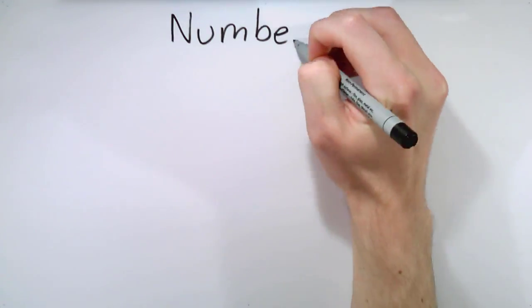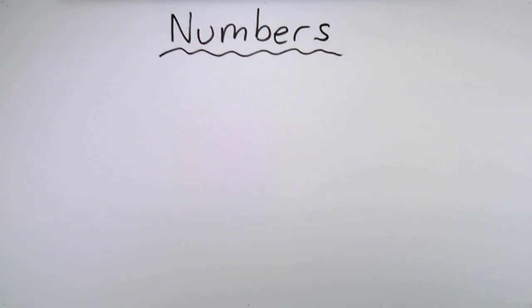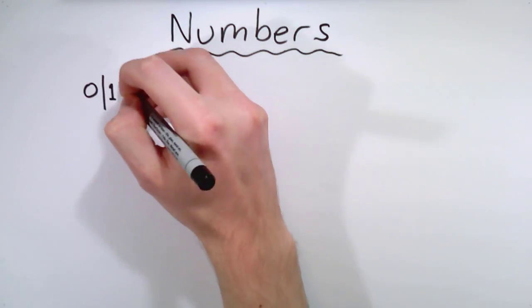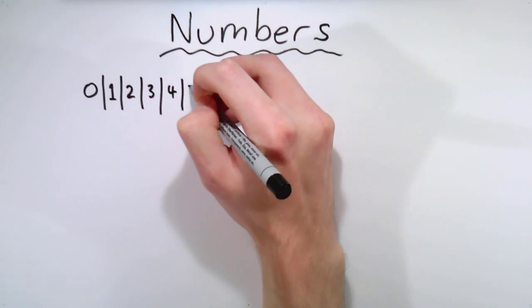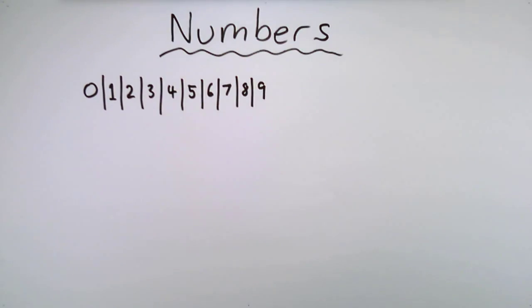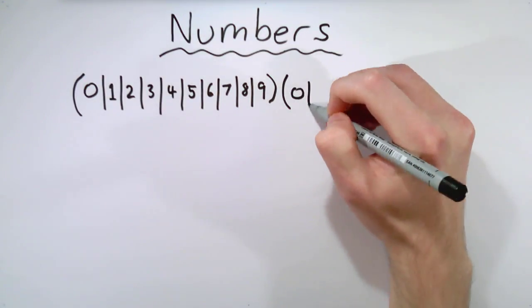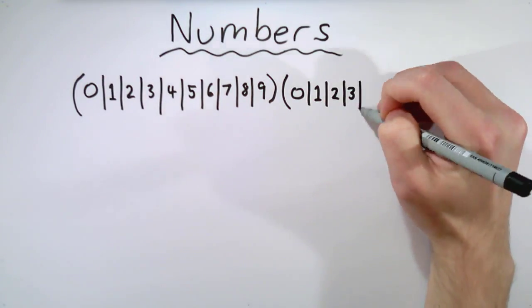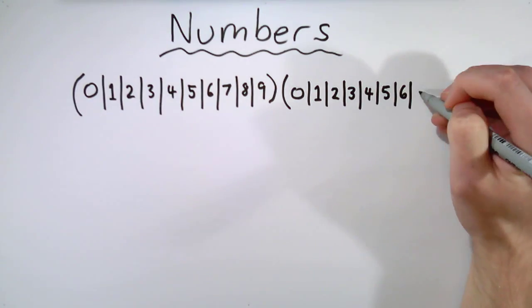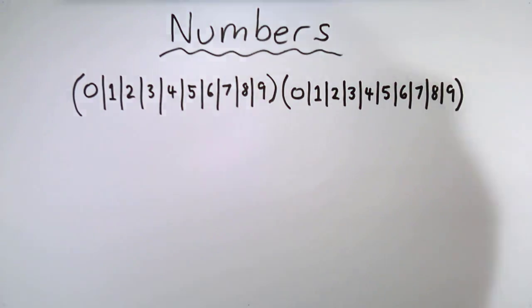Let's say we want to match every number in a text. Numbers are made up of one or more digits concatenated together. Using our basic regex symbols, that would be any digit: zero or one or two or three or four or five or six or seven or eight or nine, concatenated with zero or more of any digit: zero or one or two or three or four or five or six or seven or eight or nine star.